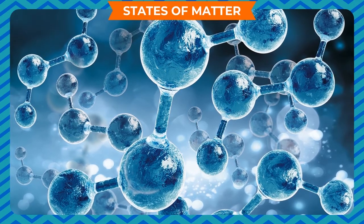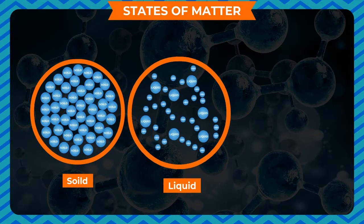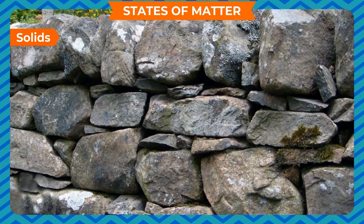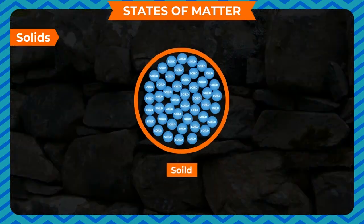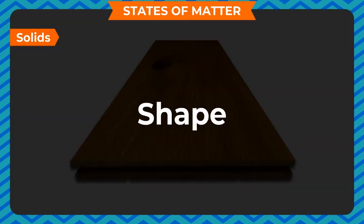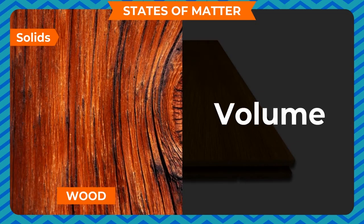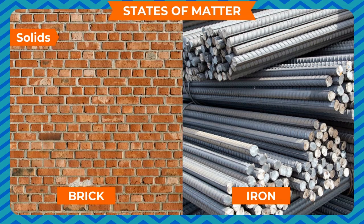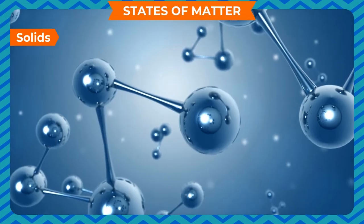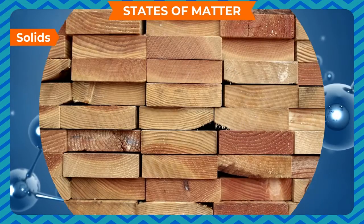States of matter: based on the arrangement of molecules, matter is categorized into three states — solid, liquid, and gas. In a solid, the molecules are very tightly packed and attract each other with a strong intermolecular force, so they cannot move freely. Solids have a definite shape and volume.